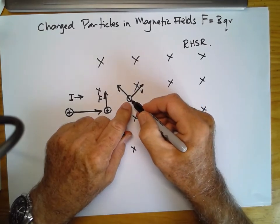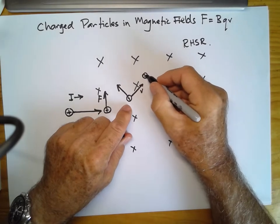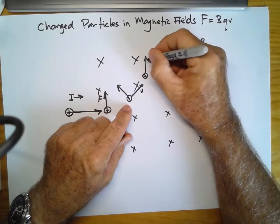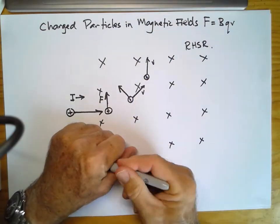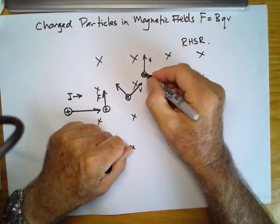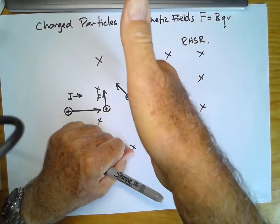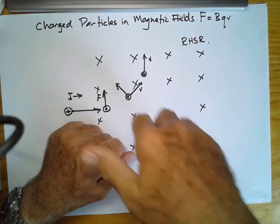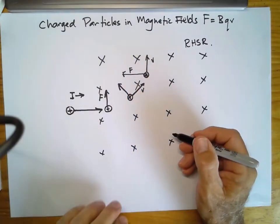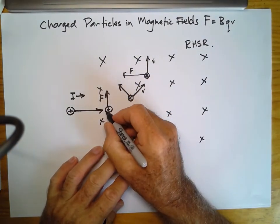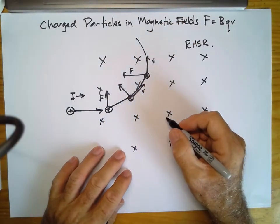The force on this particle moves it further along, and now the particle is moving in this direction with velocity v. A positive particle moving in this direction is equivalent to a conventional current in that direction, with the magnetic field into the board — it will experience a force to the left. The path of this particle is therefore circular, which we will explore further when we look at mechanics.